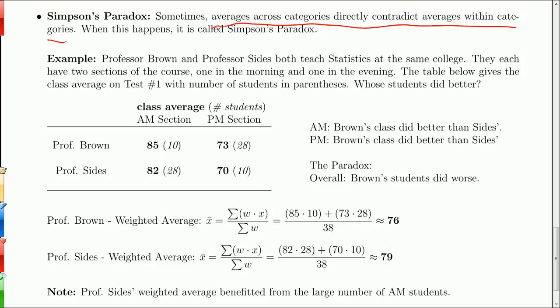And so here's an example. And I'll go through it just from this contingency table here. So we have two professors, Professor Brown and Professor Sides. They each teach two sections of stats, one in the morning. And so here's what I want to look at. If you look at the morning sections, Professor Brown has an average of 85. Professor Sides has an average of 82. So Brown did better than Sides in the morning sections. And if you look at the PM sections, again, Brown's 73 is better than Sides 70. So if you look in the PM, Brown's class did better than Sides. And here's the paradox.